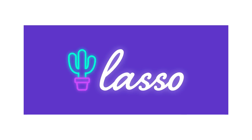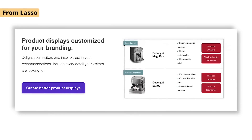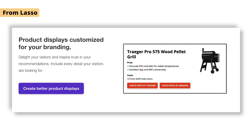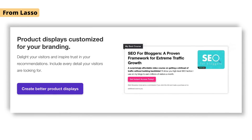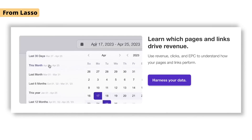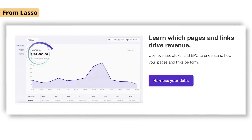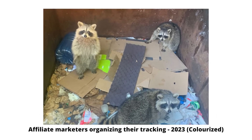Wouldn't it be nice if on top of getting more traffic from your SEO testing, you also got more conversions? That's what Lasso is offering — a suite of cool tools for affiliate marketers that allow you to make more money with your existing traffic. On top of offering cool-looking affiliate widgets like comparison tables and product features that look good and are well optimized on all devices, they also offer to track your affiliate links and revenue.